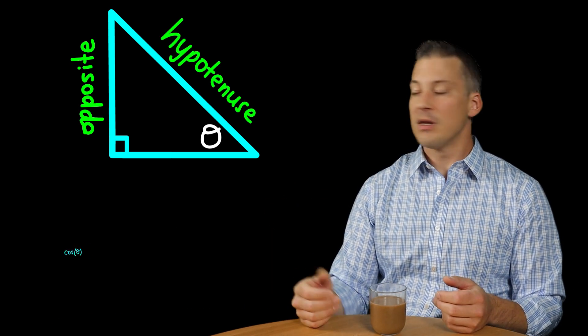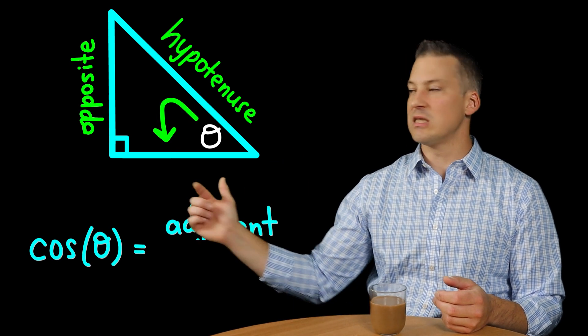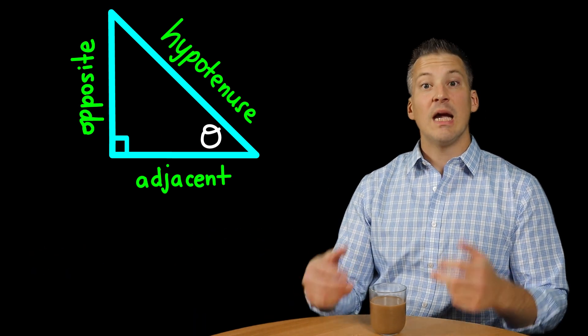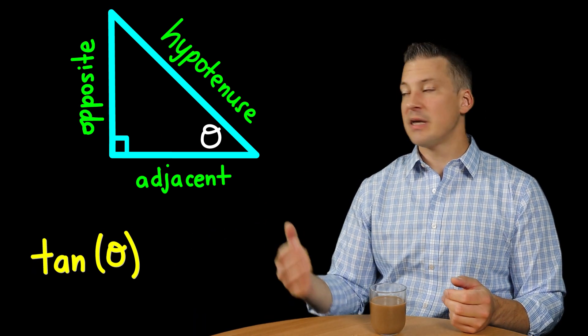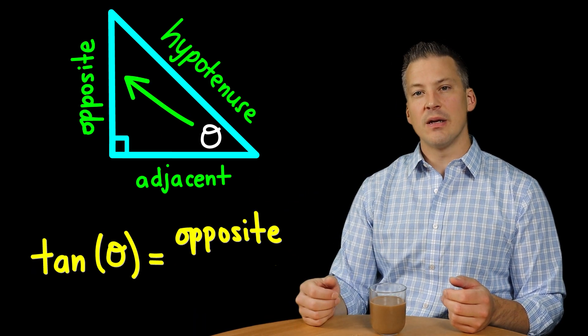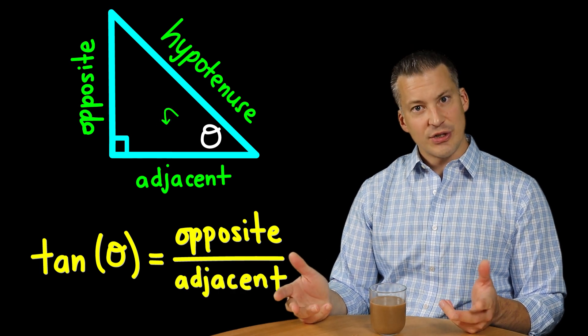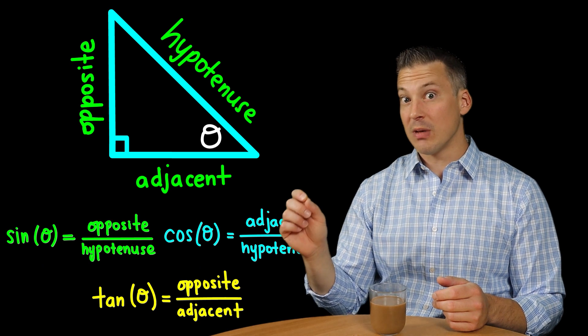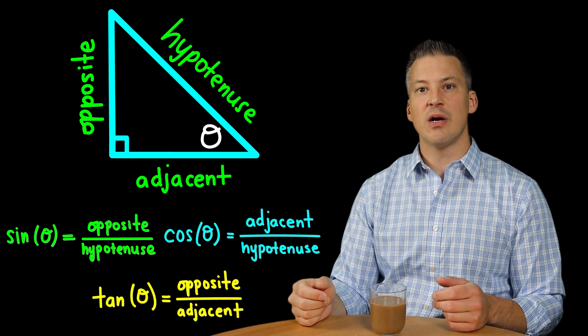Cosine then is going to be the measure of the adjacent side or the length of the adjacent side divided then by the hypotenuse. And if you want to find the tangent of the angle, it's simply the measure of the opposite side then divided by the measure of the adjacent side. And remember, one more time, that all these trig functions are relative to a particular angle inside of that right triangle.